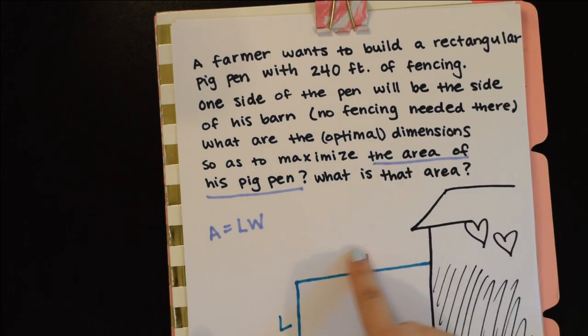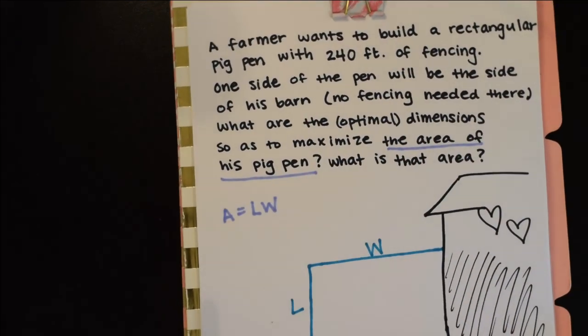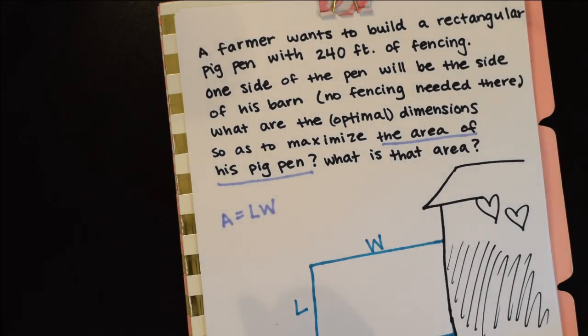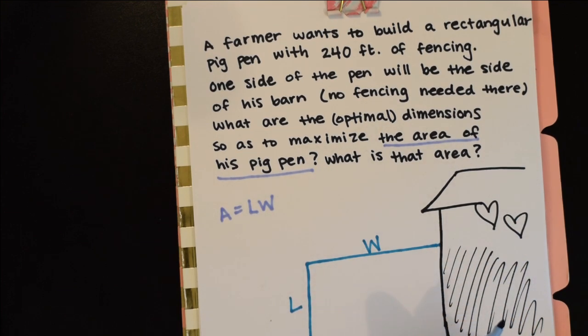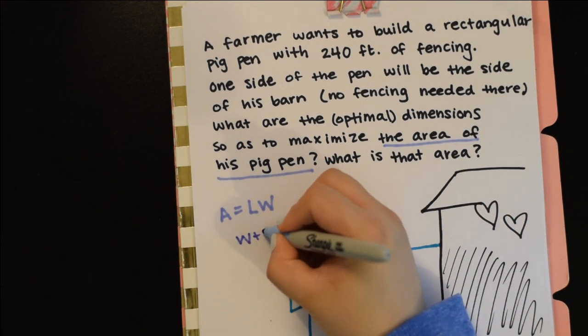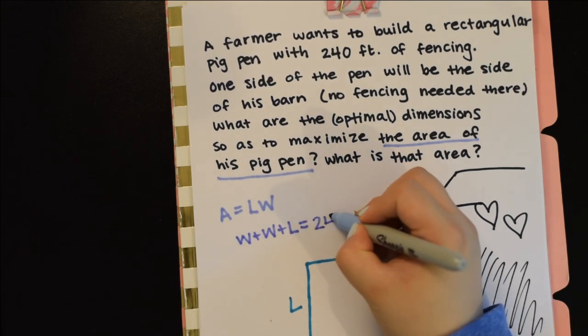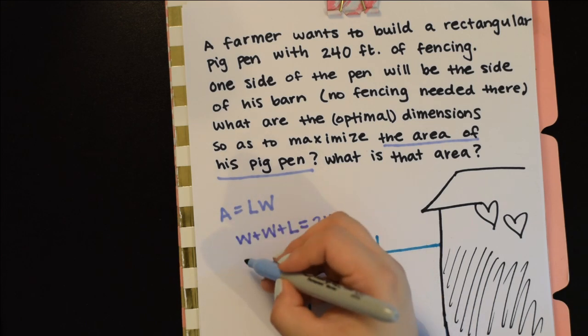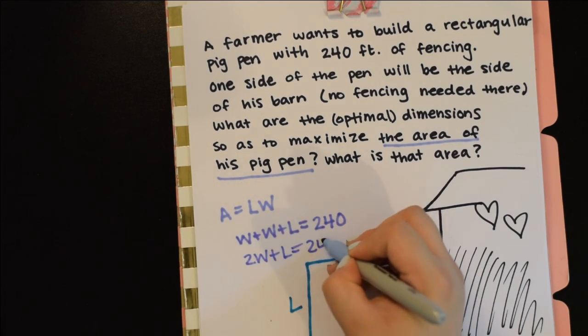With the 240 feet of fencing, we're going to write what we're given as an equation. We have W plus W plus L because we don't need this side, so we have 2W plus L equals 240.